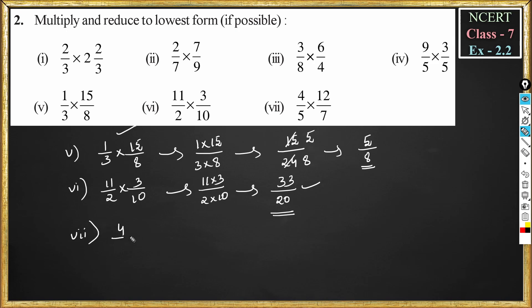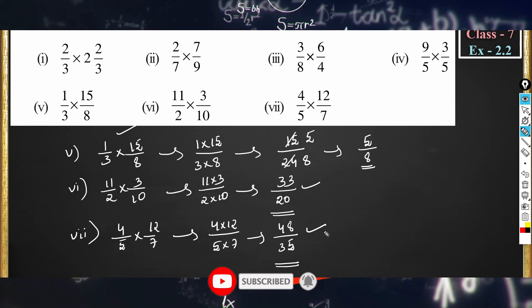Problem number 7: 4 by 5 multiplied by 12 by 7. This can be done as 4 into 12 divided by 5 into 7. 4 into 12 is 48, divided by 5 into 7 is 35. There are no common factors except 1, so this is already in simplest form. The answer is 48 by 35.